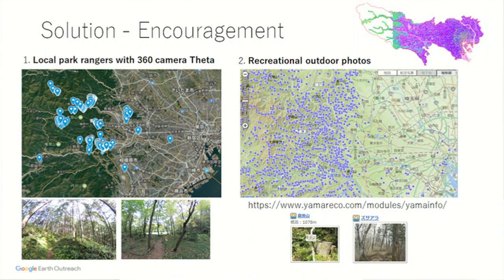And this is the solution. What we are doing now is asking local park rangers to carry around the Theta to photograph many, many trees and forests. That way, tagged with GPS, we can see what the forest condition is. We also started collecting more data from recreational outdoor photos — people going hiking and taking many pictures in the forest and uploading them for fun. We started using those photos to see what the forest condition is.